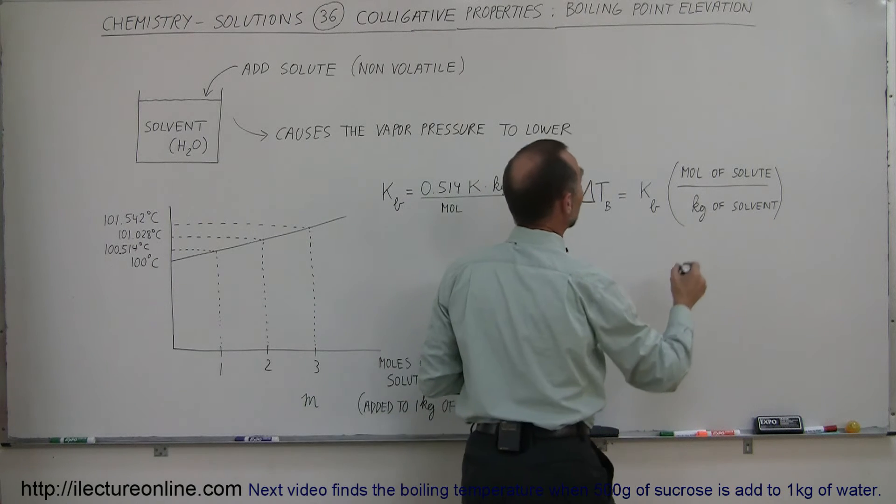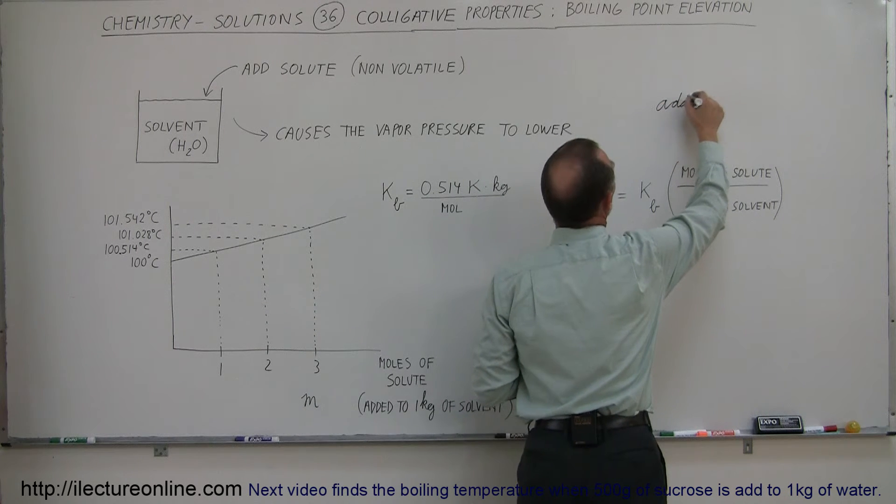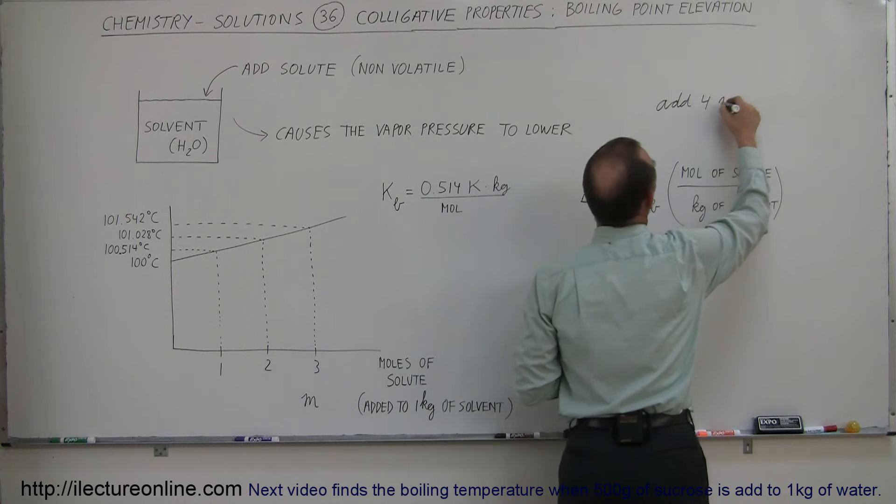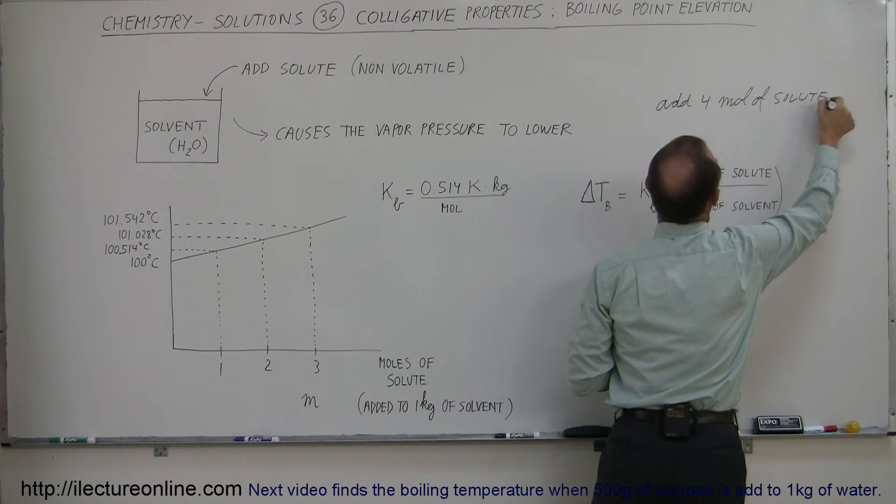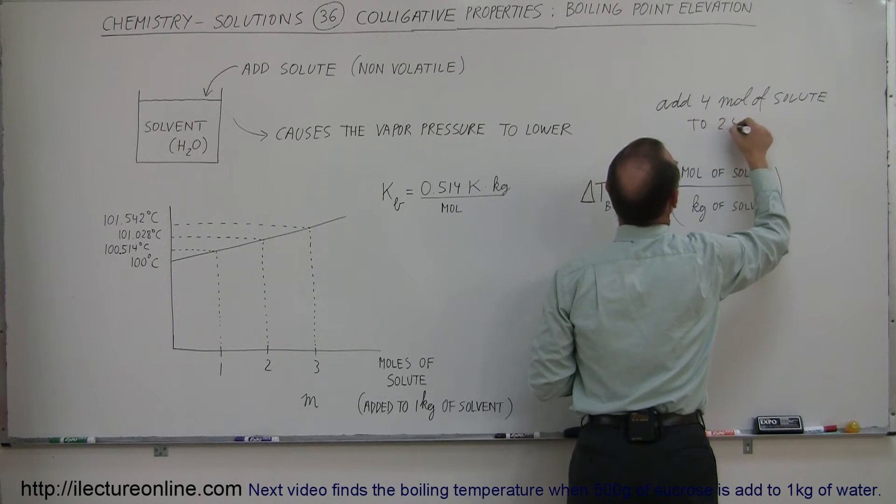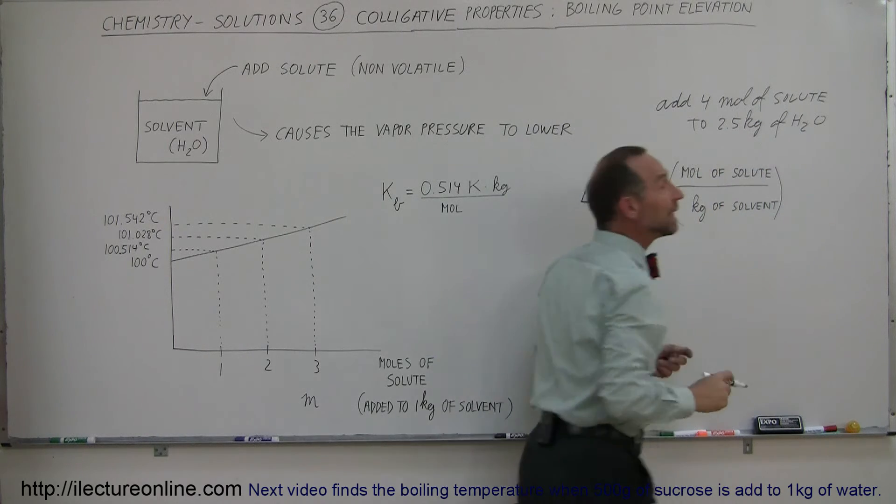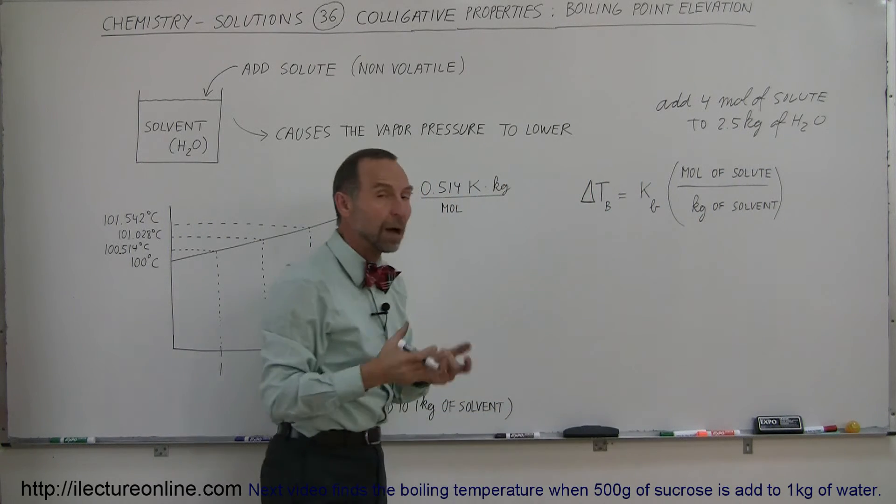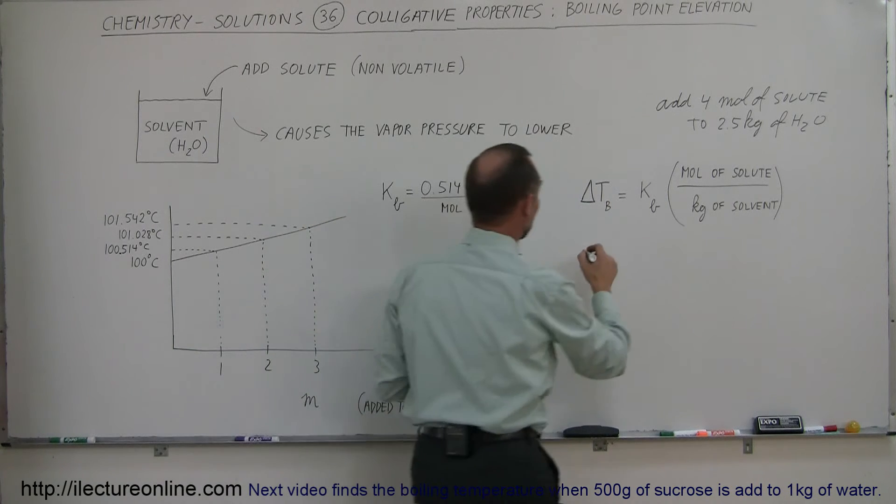Let's say we add four moles of solute to 2.5 kilograms of water. What would now be the difference in the boiling temperature? How high would the boiling temperature be?